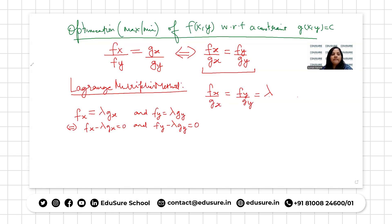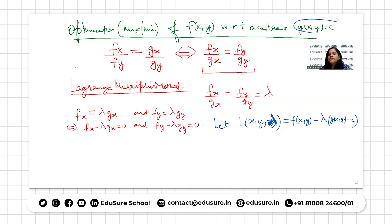So now we are going to develop a method. Let us define a Lagrange function L(x, y, lambda), which is defined as f(x,y) minus lambda times g(x,y) minus c.